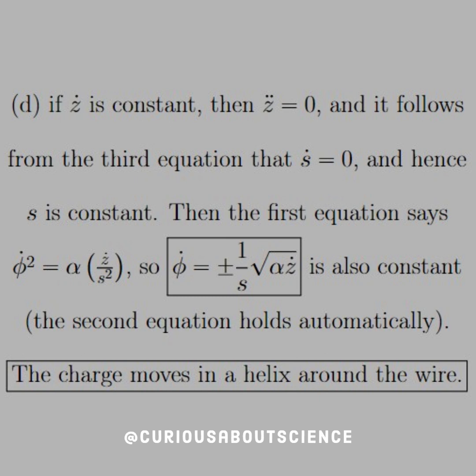Now that we have the equations of motion, we can set z dot equal to a constant. If it is a constant, the derivative of a constant is zero, so z double dot is zero. Then it follows from the third equation: if z double dot is zero, s dot has to be zero since you're setting it equal to zero.